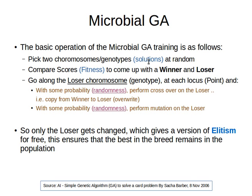Then, we spoke in the last video about selection. In the microbial genetic algorithm, we're going to randomly pick two candidate solutions. We won't use the idea of selecting chromosomes according to their fitness or with probability proportional to fitness. We'll just pick two solutions randomly from the population — that's the selection.